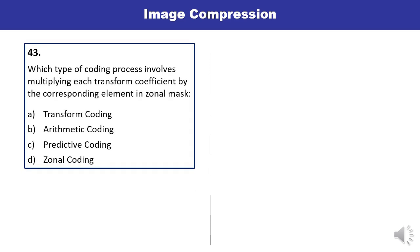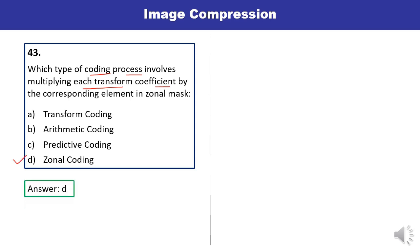Question 43: Which type of coding process involves multiplying each transform coefficient by the corresponding elements in a zonal mask? It is zonal coding. That is the correct answer.